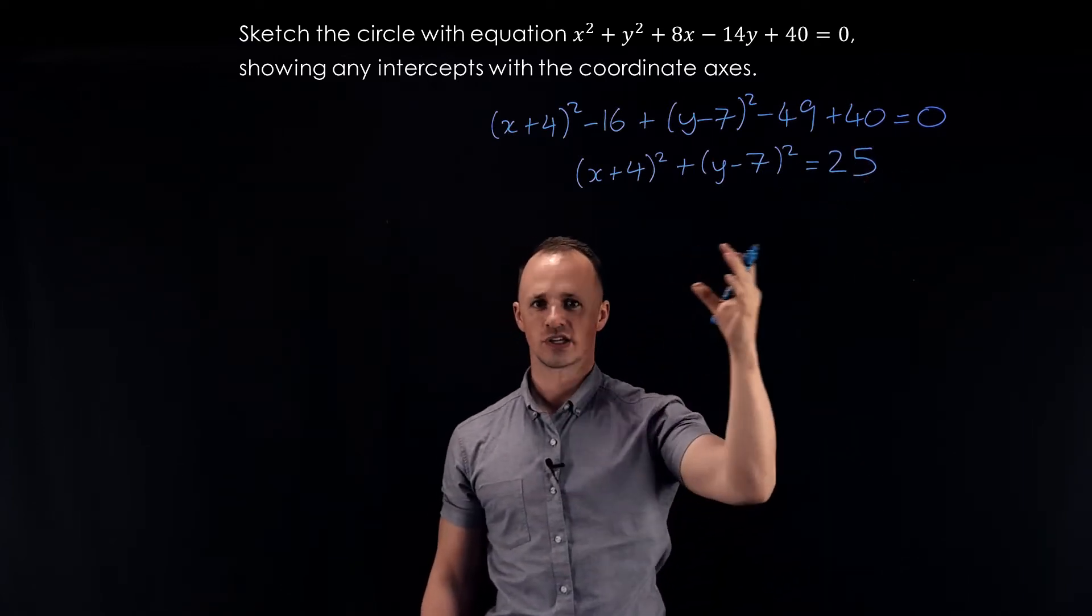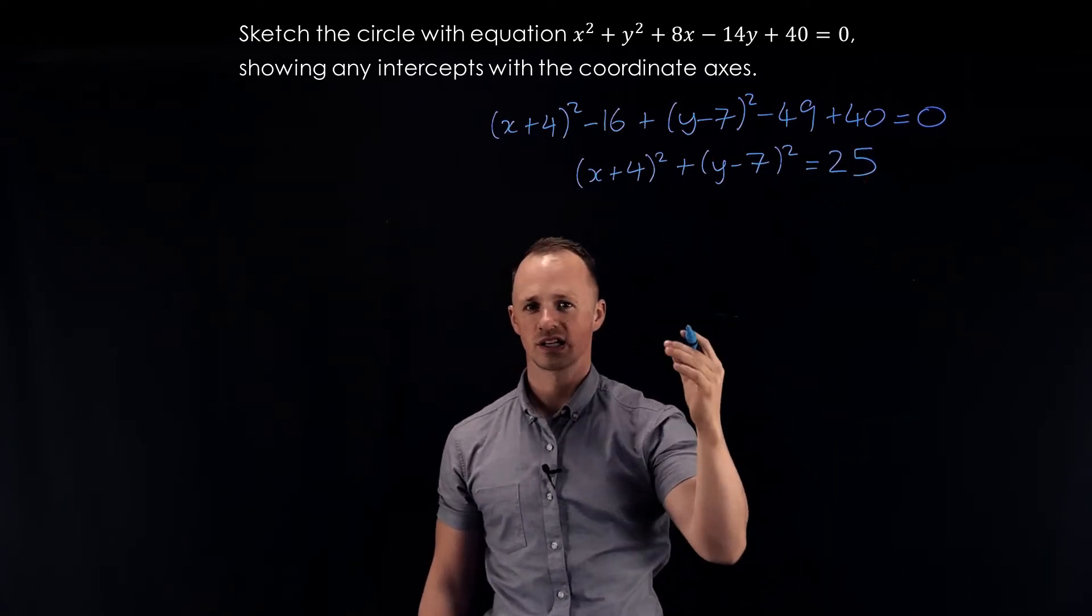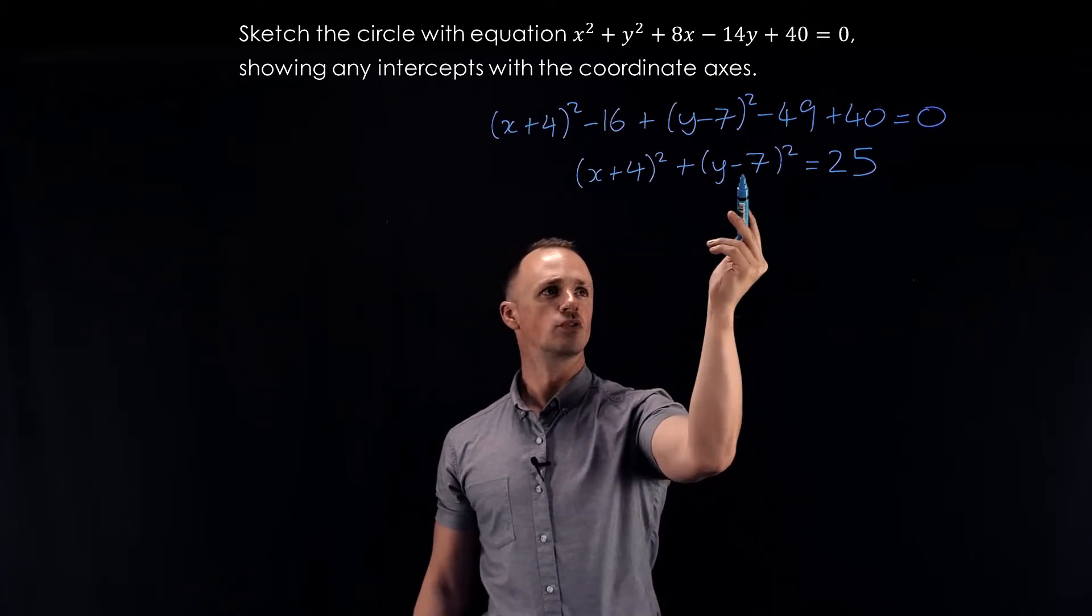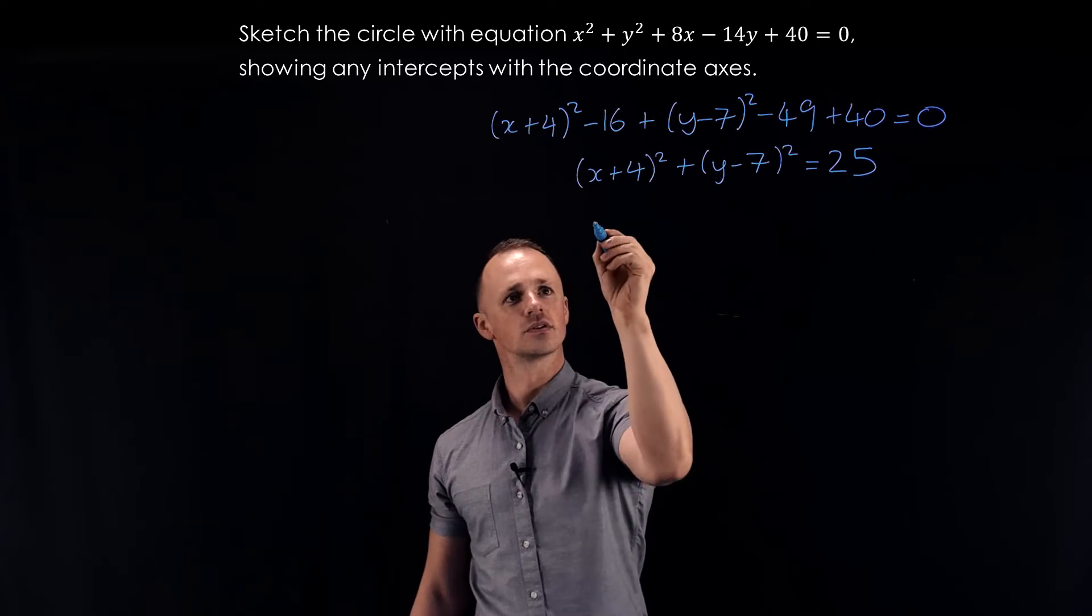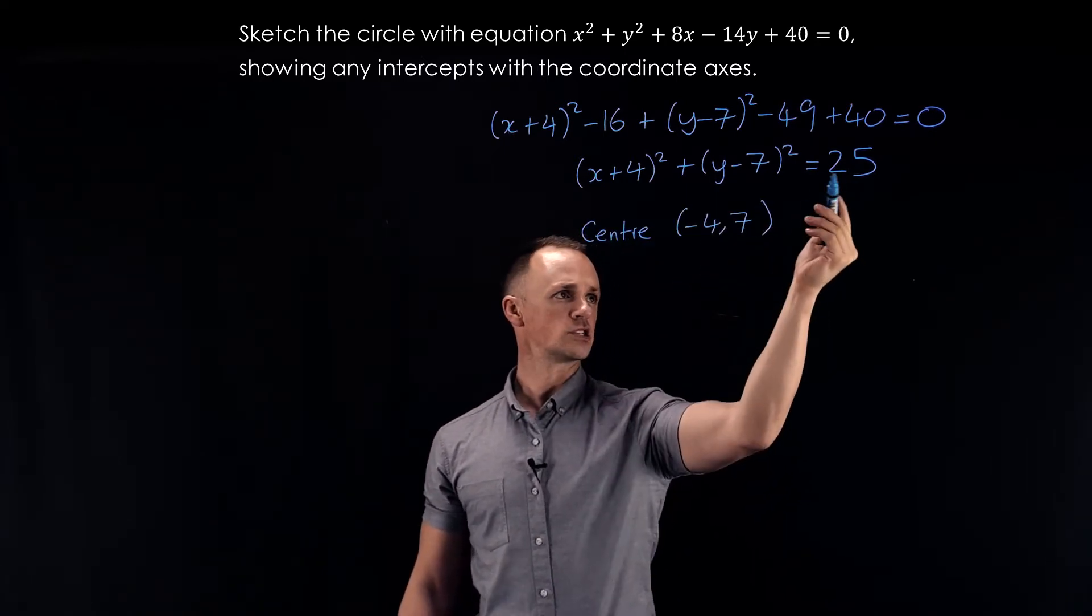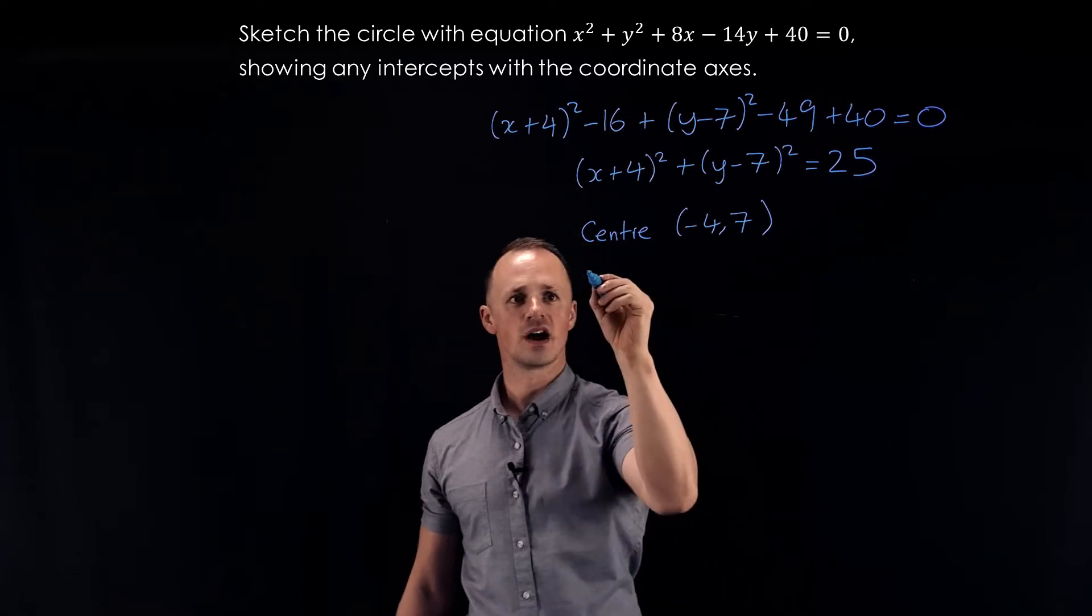Now that I've written my circle equation in completed square form, I can quite easily see what the center and radius will be. The center is going to be minus 4, 7, and the radius is going to be the square root of 25, which is 5.